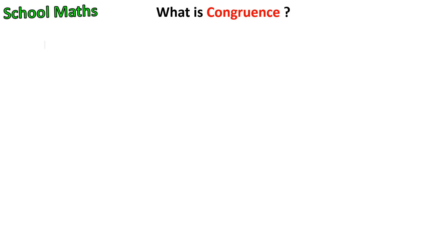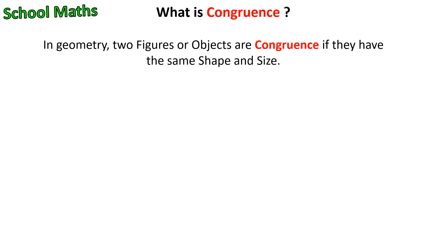Let's start. In geometry, two figures or objects are congruent if they have the same shape and size. I've shared an example using three triangles.